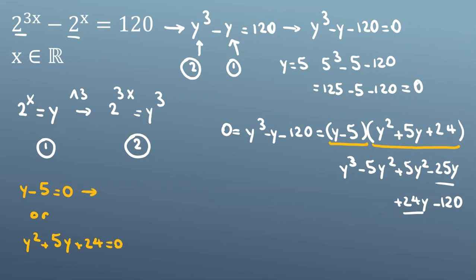So either y - 5 = 0, or y^2 + 5y + 24 = 0. In the first case, y = 5. We want to find x, so from our original substitution, 2^x = y = 5.